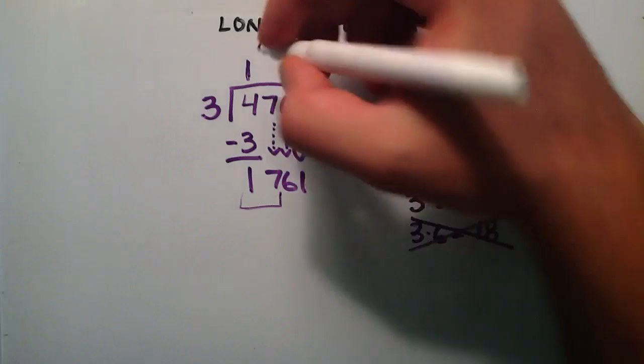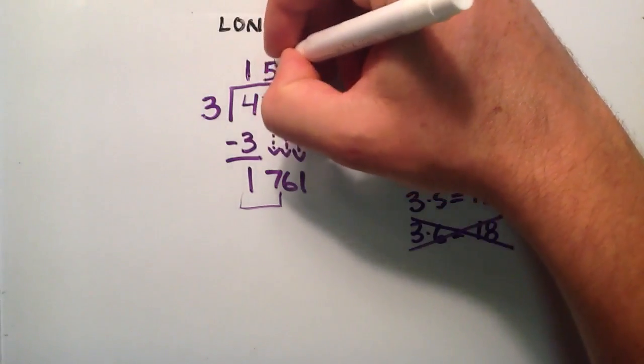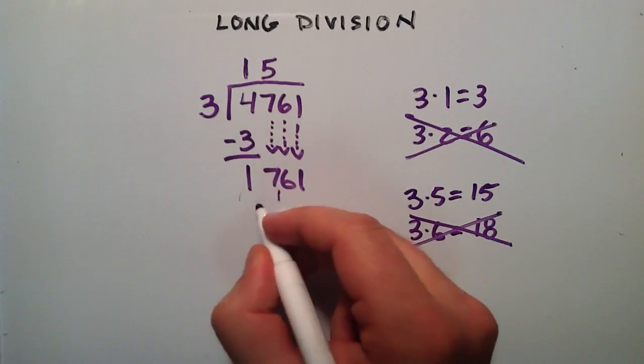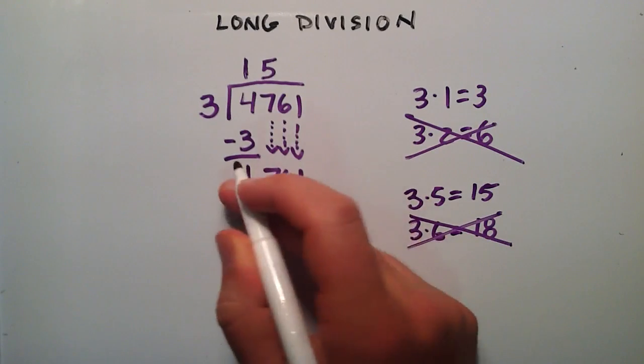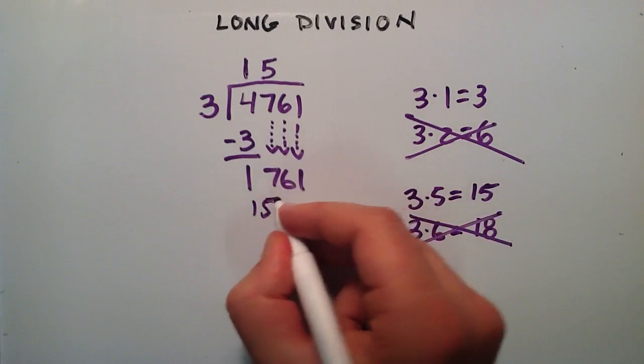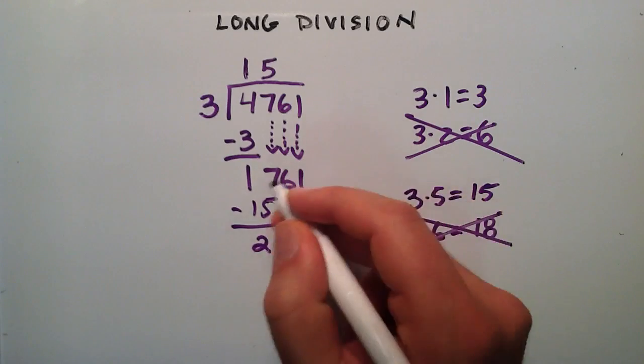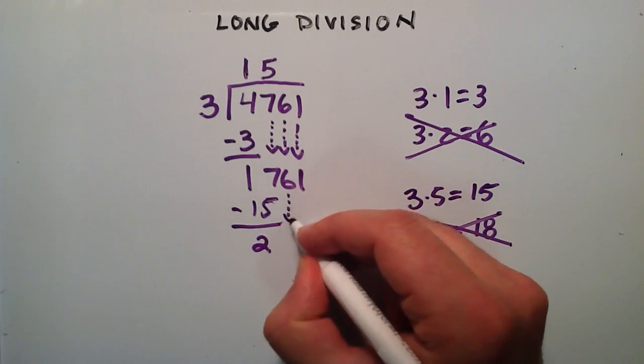So therefore 5 goes up here. And then we take 3 times 5, which is 15, and we subtract it from 17. 17 minus 15 is 2. And then these numbers fall down.